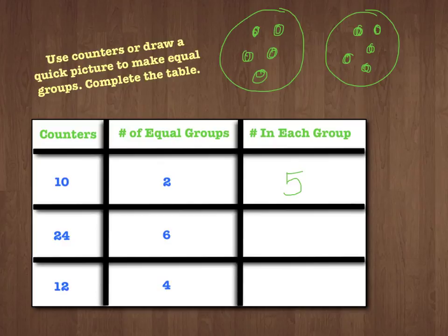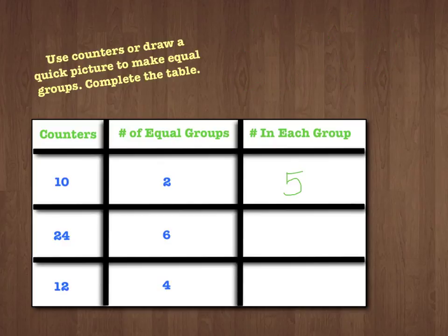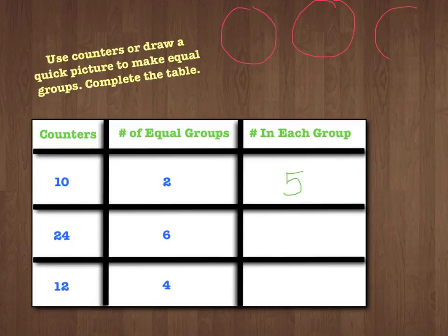Let's look at the next one. We have 24 counters, and we're going to put them into 6 equal groups. So the first thing I need to do is draw my 6 equal groups: 1, 2, 3, 4, 5, and 6.